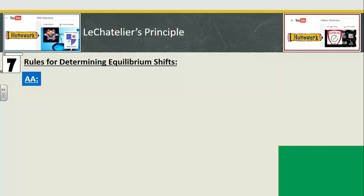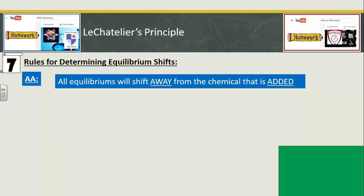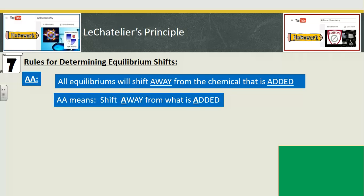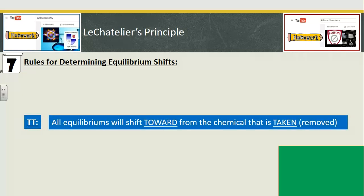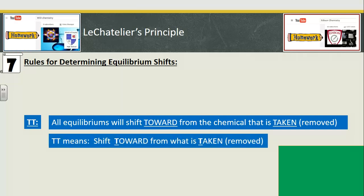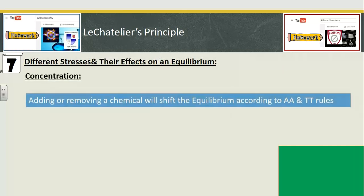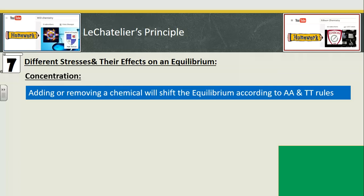The rule is very simple: AA and TT. AA means all equilibriums will shift away from the chemical, heat, or pressure that is added. You shift away from whatever is added. You add heat — shift away from the side that contains heat. You add a compound — shift away from the side that has that compound. You add pressure — shift away from the side that has the gas. TT means you shift towards what is taken away — towards the side that has heat taken away, towards the side that has a product or compound taken away, and towards the side with fewer gas molecules if gas is removed. Adding or removing a chemical will shift according to AA and TT rules: away from what you add, towards what you take.